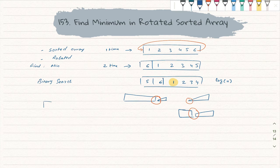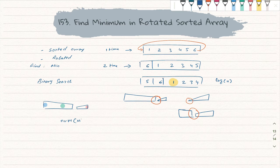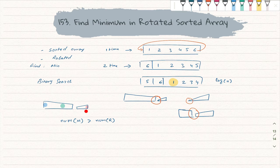We observe that in any sorted rotated array, all numbers in one range will be greater than all numbers in the other range. For binary search, we take left, right, and a midpoint, then ask: is the right side sorted? We check this by asking if the number at midpoint is greater than the number at the right side. If it is, the minimum is between mid and right — that part is unsorted.